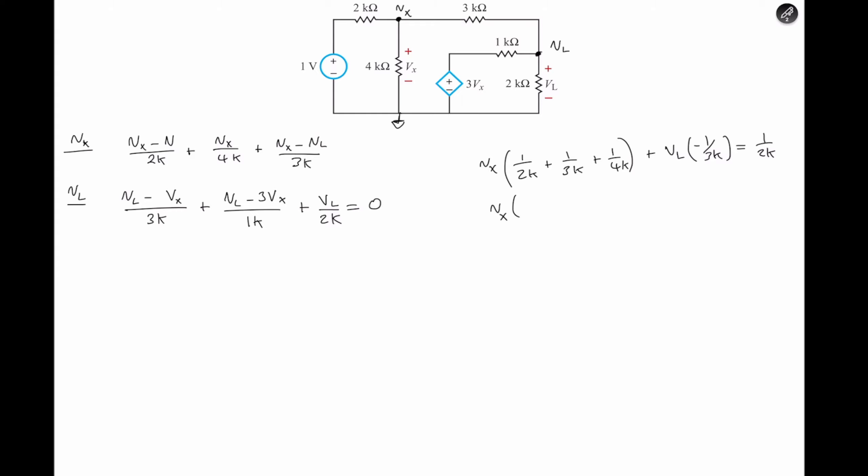Again, we have Vx negative one divided by three kilo ohms, plus Vl of one over three kilo ohms, one over one kilo ohms, one over two kilo ohms, is equal to zero.